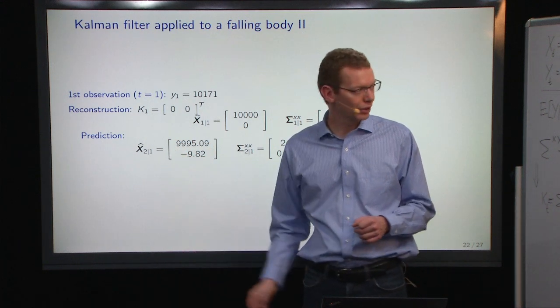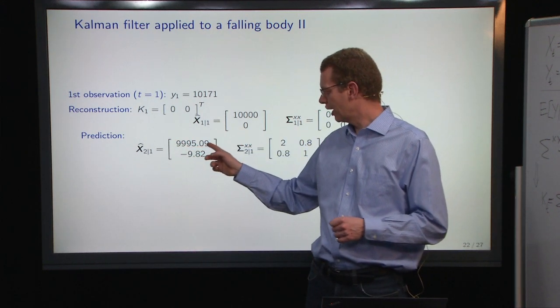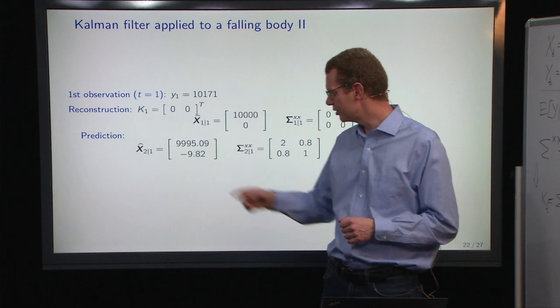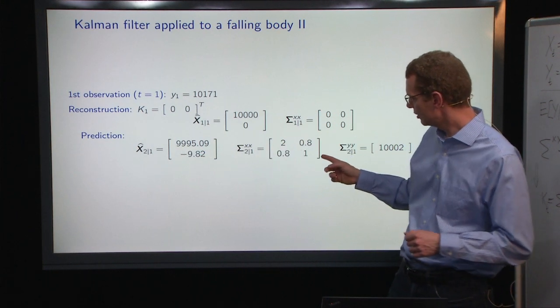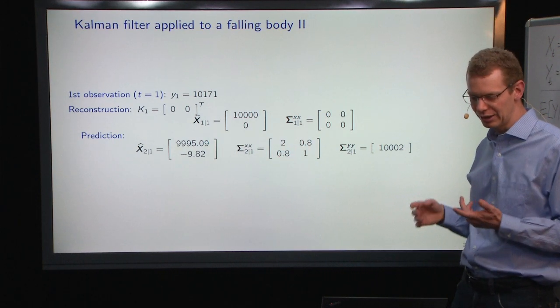We can make a one-step prediction forward where we subtract half of G here and minus G there. Then we get the observation, the system noise in here, and the observation noise increases a little bit.